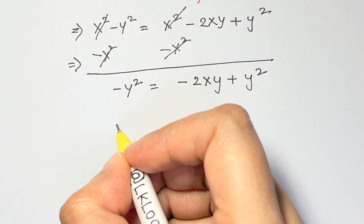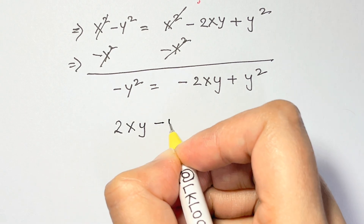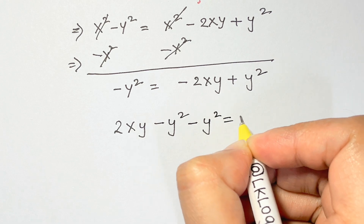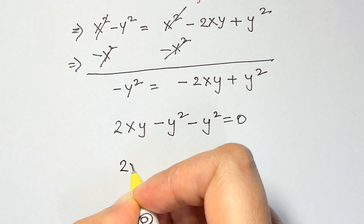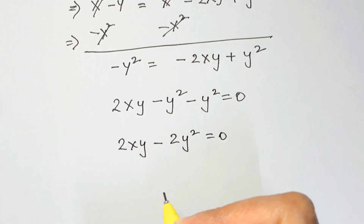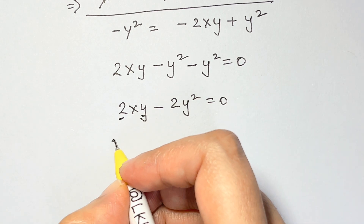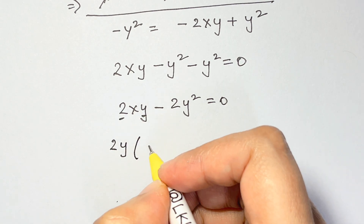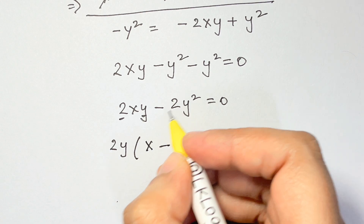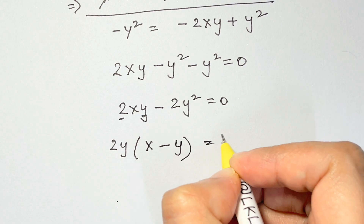Bringing everything to the left-hand side: 2xy minus y² minus y² equals zero, which gives us 2xy minus 2y² equals zero. Let's take out 2y as a common factor, giving 2y(x minus y) equals zero.